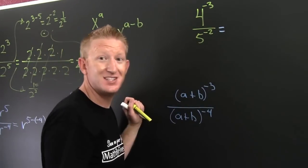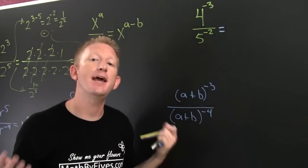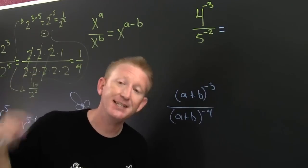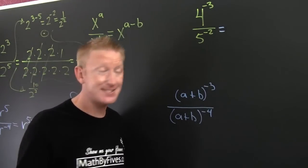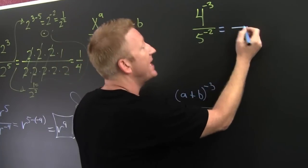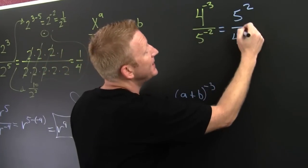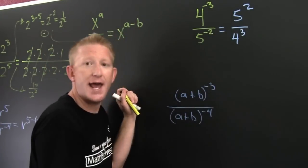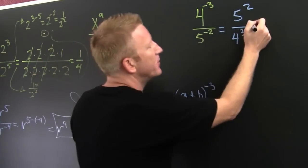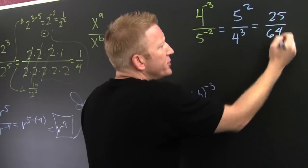So I subtract those exponents? No. Why not? They don't have the same base. This is just in case you're trying to use that property — you can't. That 5 is to the minus 2, so it's having negative thoughts, so it goes up there. And then that 4 to the minus 3 — tee hee — so that's 4 to the 3rd. We're not using this quotient property of exponents because they don't have the same base. And that's 25, and then that's 64.